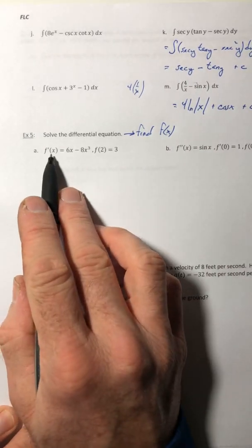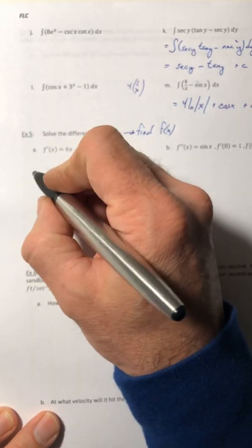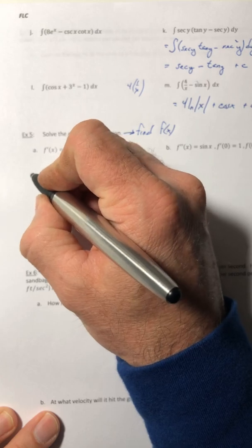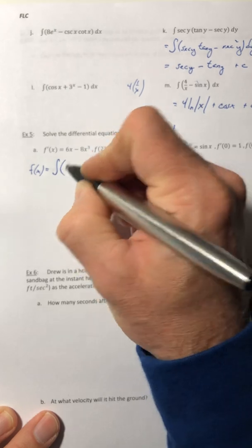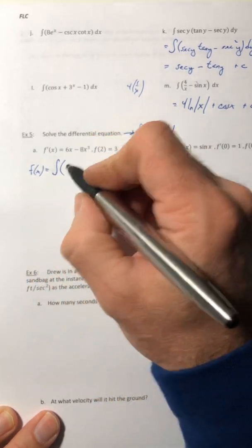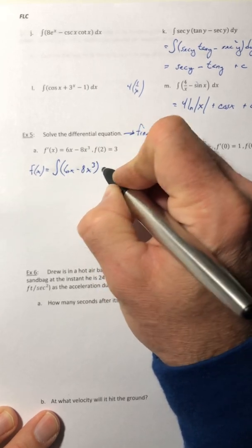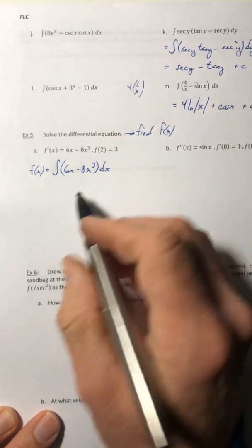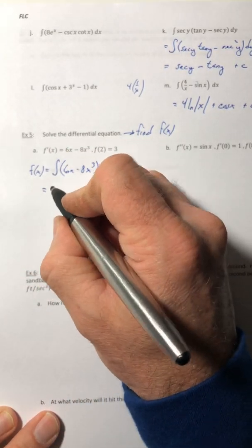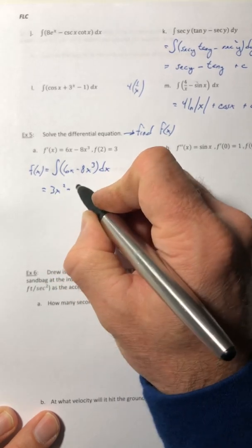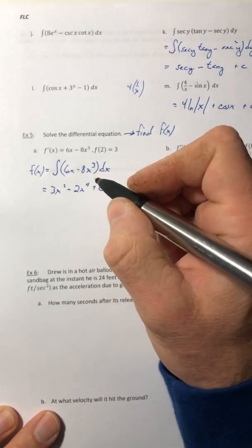So if you're starting with a derivative, how do you go from the derivative to the original function? You got to integrate. So f of x is going to equal the integral of whatever this derivative is, whatever they gave you. So 6x minus 8x to the third dx. So we're going to integrate this. And that will become 3x squared minus 2x to the fourth plus c.